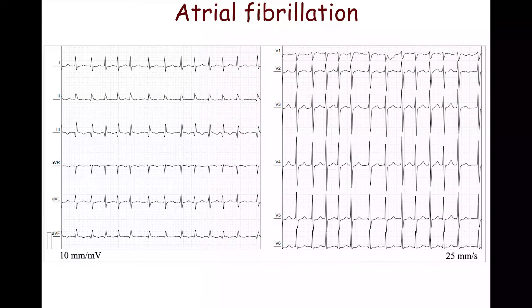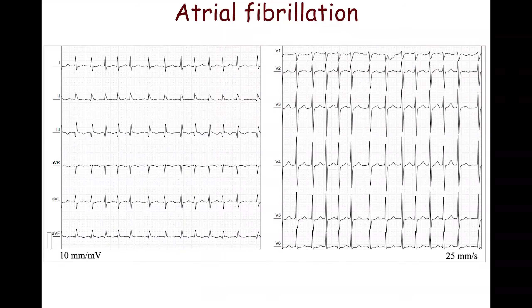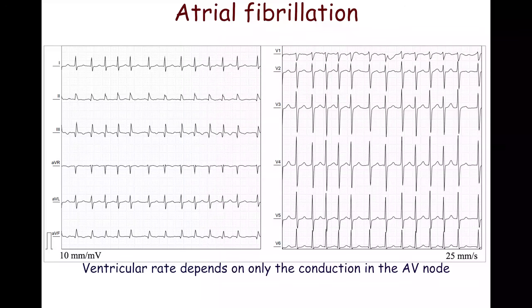In most patients, atrial fibrillation begins with a fast ventricular rate. The ventricular rate on this ECG is 166 beats per minute. Ventricular rate depends on conduction in the atrioventricular node.